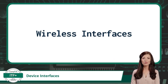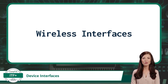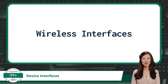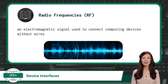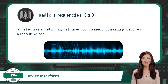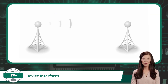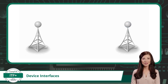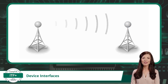If there is no cable, connector, or port we can see, then our interface must be wireless. Before going any further, I would like to address a big misconception about wireless: wireless does not mean a physical connection does not exist. Wireless connections use radio frequencies, or RF for short. Radio frequencies are an electromagnetic signal used to connect computing devices without wires. This electromagnetic connection, even though invisible to the eye, is still a physical property that allows information to be transmitted from one computing device to another, and is therefore classified as a physical interface.